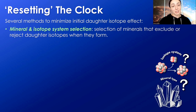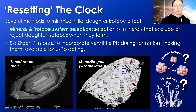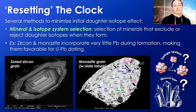The first method is to select the mineral and isotopic system carefully. The selection of minerals that exclude or reject daughter isotopes during formation is key for reducing this potential. An example is zircon — and monazite — which incorporate very little lead during formation, making them very favorable for uranium-lead dating.